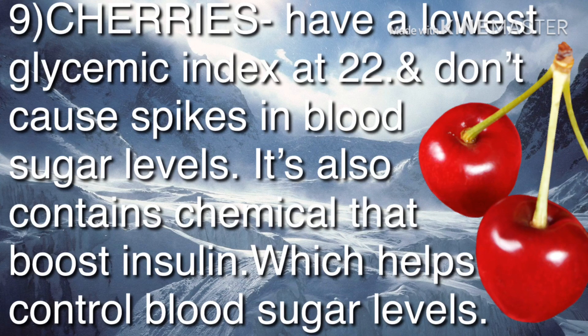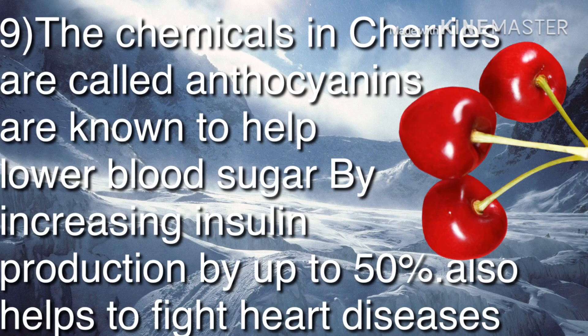Cherries have the lowest glycemic index at 22 and don't cause spikes in blood sugar levels. They contain chemicals called anthocyanins that boost insulin and help control blood sugar levels. Anthocyanins help lower blood sugar by increasing insulin production by up to 50%, and cherries also help fight heart disease.